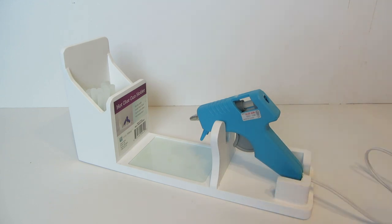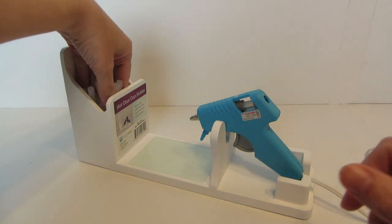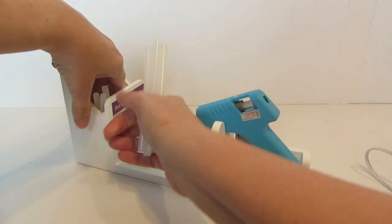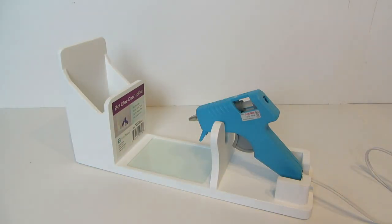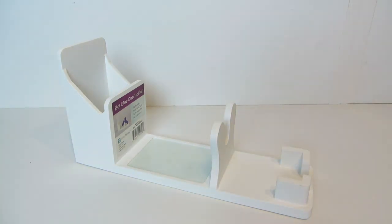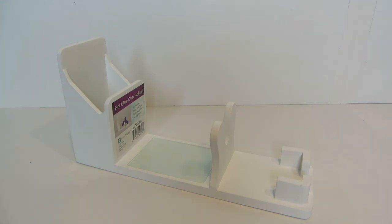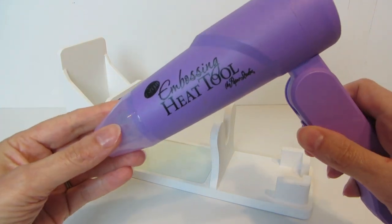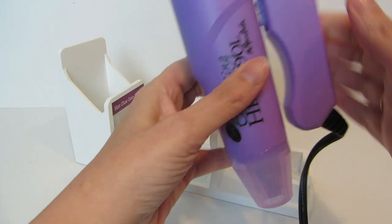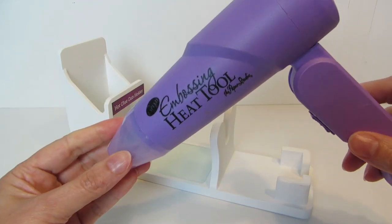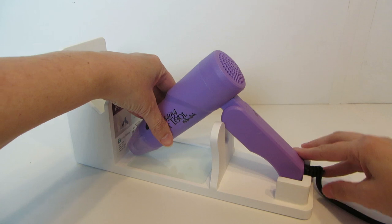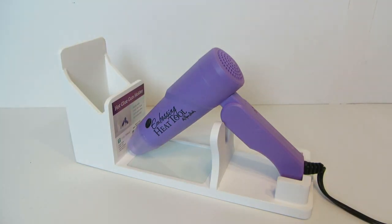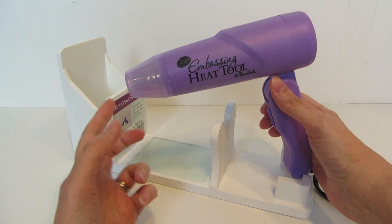I've grabbed some other tools that I thought might work with the glue gun holder. Let's see what else this will hold. So I also grabbed my embossing heat gun, used for stamping with embossing powders. There are several different styles; mine actually has a handle, so I think it's going to work really well with this. Let's see—oh yeah, that actually fits perfectly!